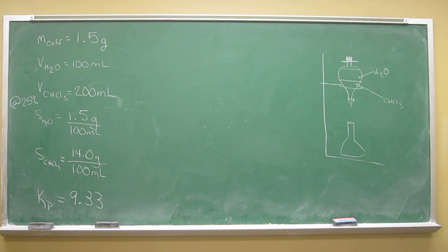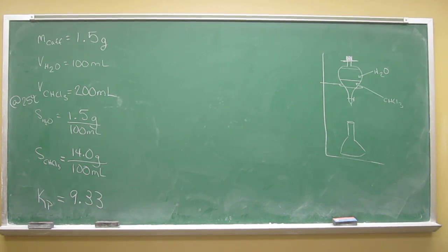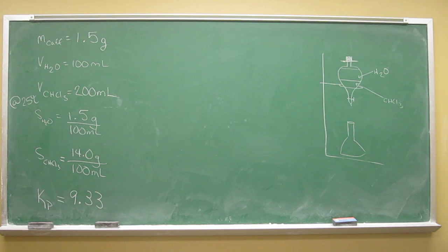So instead of wanting to know the partition coefficient, which we know already is 9.33, it asks us three questions. What quantity of caffeine will be present in the 200 mL chloroform layer after the extraction? What quantity of caffeine will be present in the 100 mL water layer after the extraction? And what percentage of the caffeine has been extracted from the original aqueous solution during this extraction?